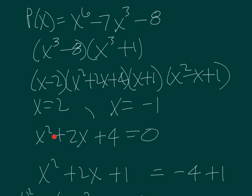What we need to do now is solve this quadratic equation, x squared plus two x plus four equals zero. And we can do that by completing the square.